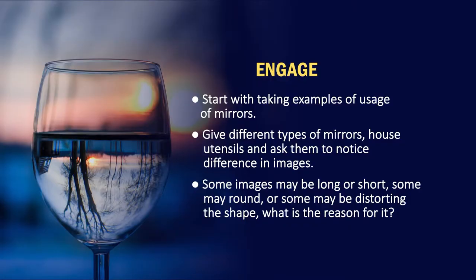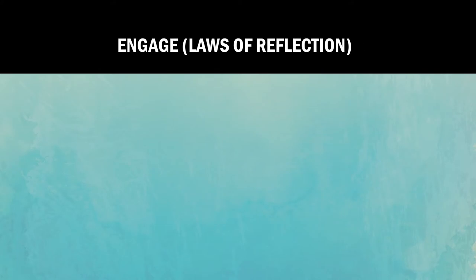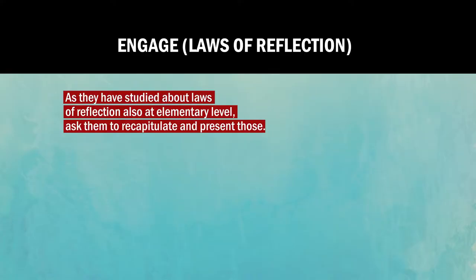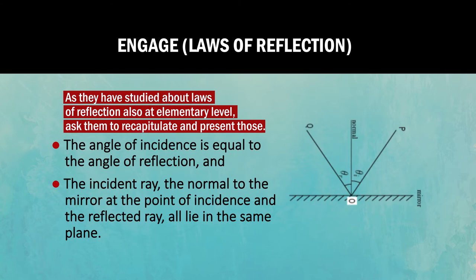Now the question is: why is this happening? To explain that reason, you need to help them recall the laws of reflection, which they have already studied at elementary level — maybe in class 7 or class 8. Let them recapitulate. They will tell you that for a plane mirror, the angle of incidence is equal to the angle of reflection. The angle of incidence is the angle between the normal and the incident ray, and the reflected ray, the incident ray, and the normal all lie in the same plane.